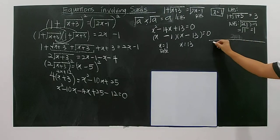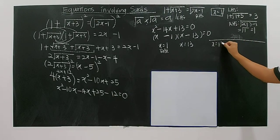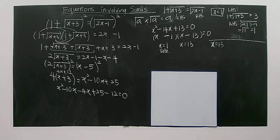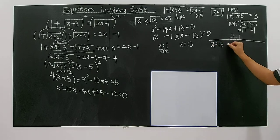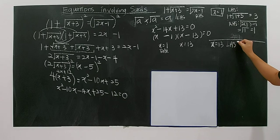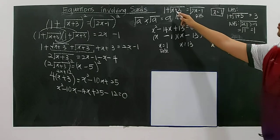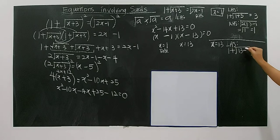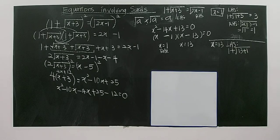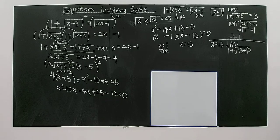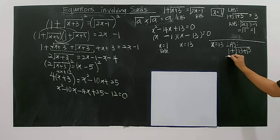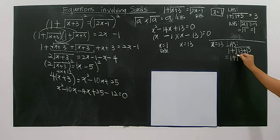Now let's check x equals to 13 — it might also be a false solution. Left hand side: 1 plus square root of x plus 3 equals 1 plus square root of 13 plus 3 equals 1 plus square root of 16 equals 1 plus 4 equals 5.